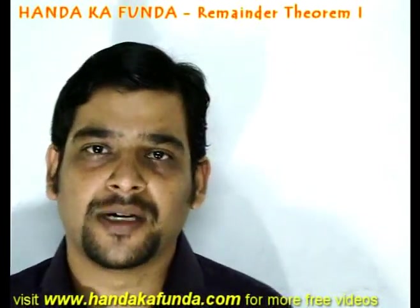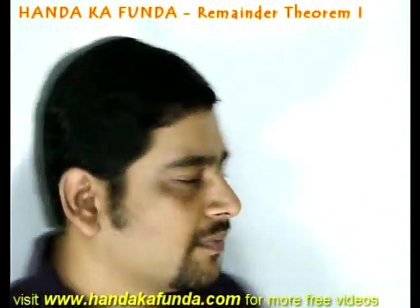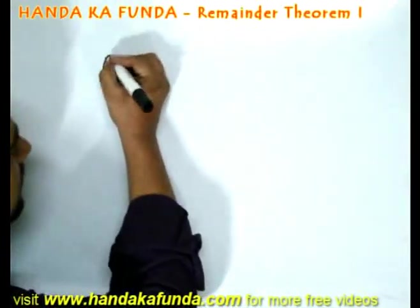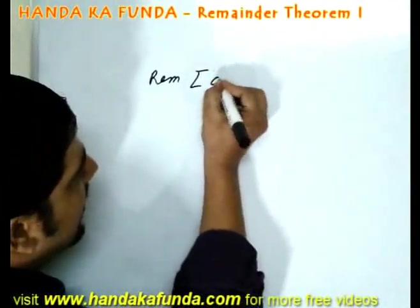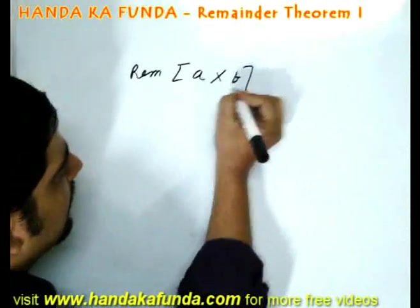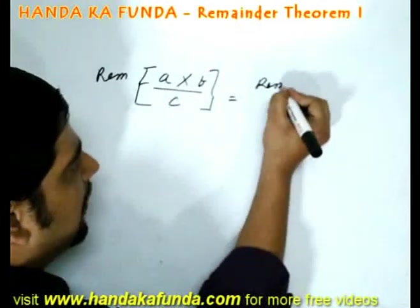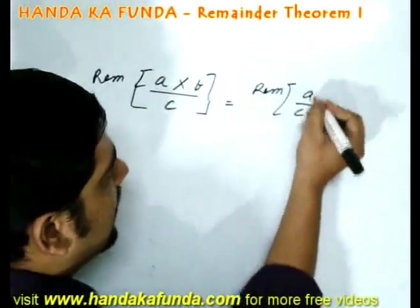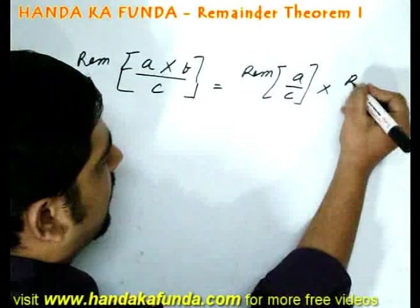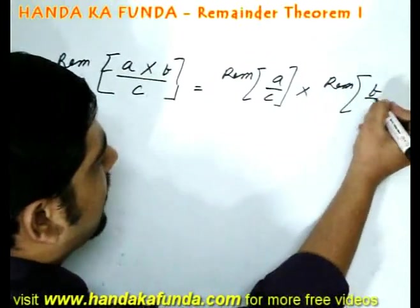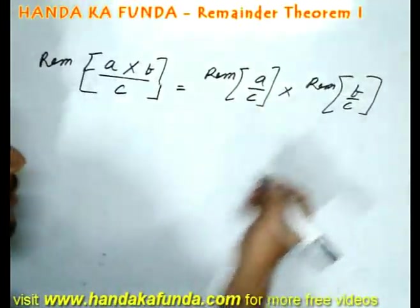However, for long complicated numbers, here is what we can do. The remainder of a times b from particular number c is given by, we first find out the remainder of a from c, we find out the remainder of b from c, and we can just multiply them to get an answer.